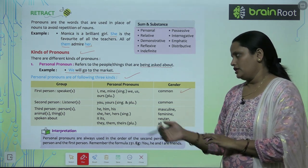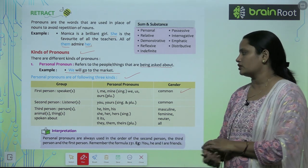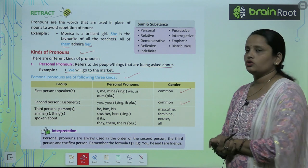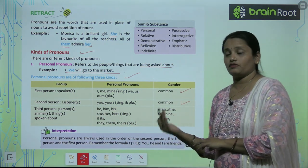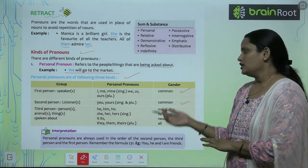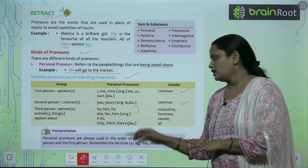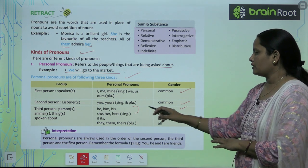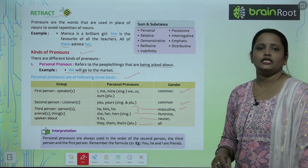Second person pronouns — you and yours — are common gender. For third person: he, him, his for boys; she, her, hers for girls; it, its for neuter gender; and they, them, their/theirs for plural — used for all genders.